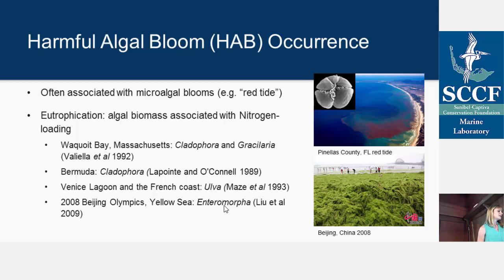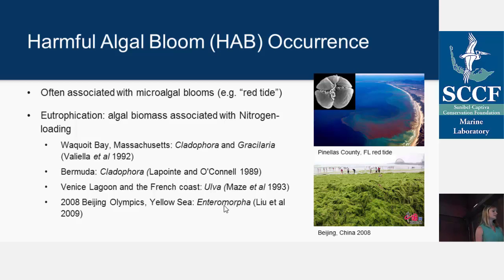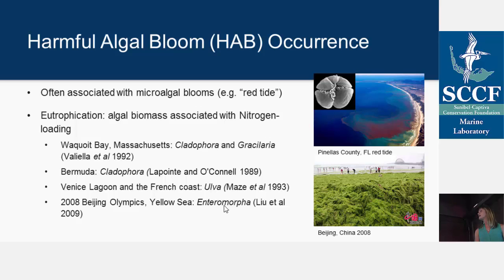Most often seagrasses are light-limited in estuarine systems, but algae are nutrient-limited. So when there are increases in nutrient loading, this leads to the overproduction of algae. Macroalgal blooms can therefore be viewed as an indicator of pollution or eutrophication — the term we use to describe excess nutrients usually coming from runoff. Typically in estuarine systems the limiting nutrient is nitrogen for algal blooms, while in freshwater systems it tends to be phosphorus.